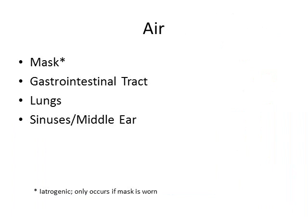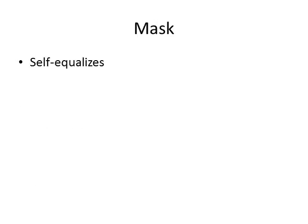If we look at the four spaces where we contain air during a dive, we have the mask, the GI tract, the lungs, and the sinuses or middle ear. The mask is great because that airspace will self-equalize — any increase in volume will simply escape out the sides of the mask.